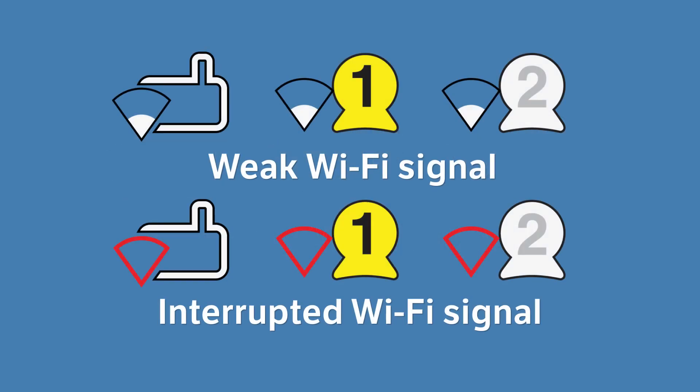When you see the following icons, it indicates the signal is weak, and when the icon is red, it indicates the signal is interrupted.